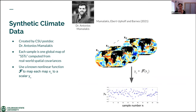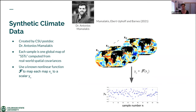That was a simple example, so let's go on to a more complex one. I'm going to use a dataset developed by Dr. Antonius Mamalakis, advised by Dr. Emma Ebert-Uphoff and myself at CSU. He created a synthetic climate dataset where the inputs are maps of synthetic sea surface temperatures with realistic spatial correlations. Their labels are created as a nonlinear function F that maps each input x onto a scalar y — a nonlinear weighted sum of sea surface temperatures over the globe. Importantly, we know what F is because Antonius designed it, so we know the right answer.